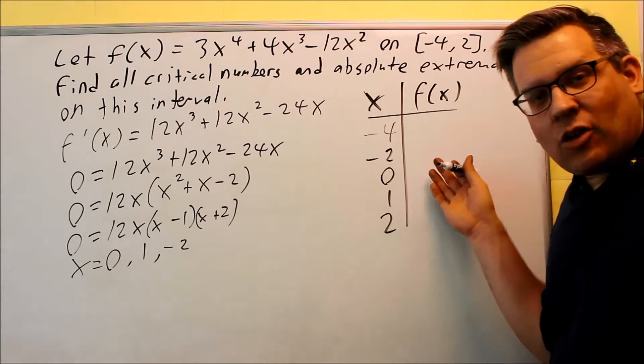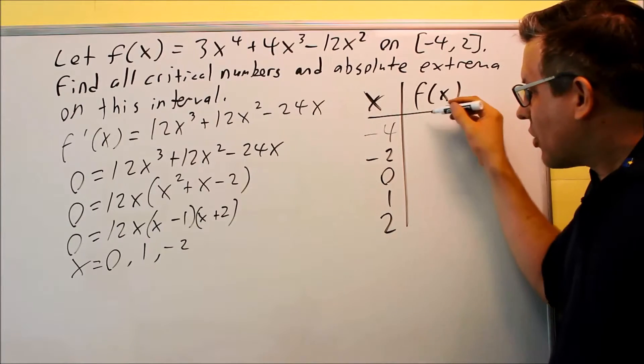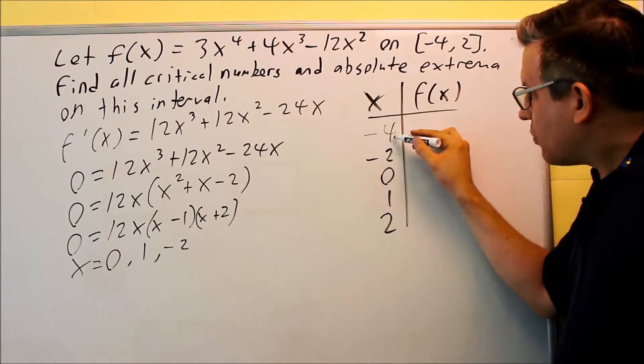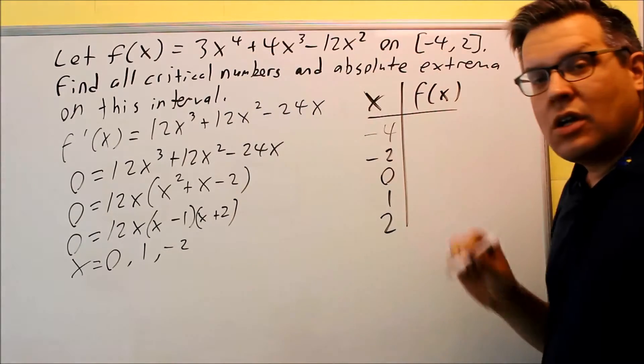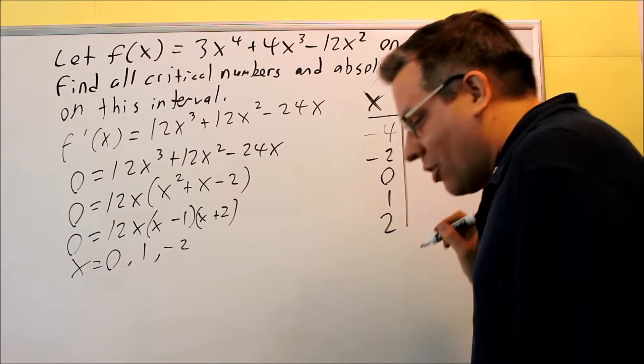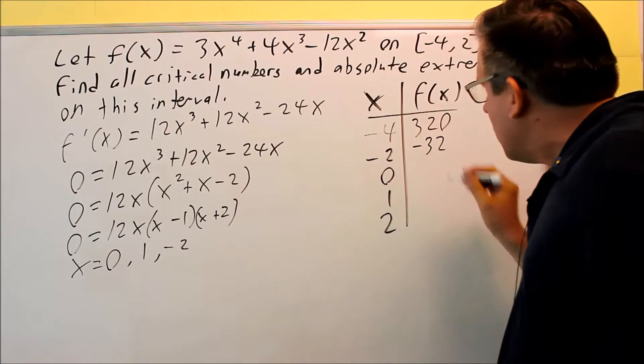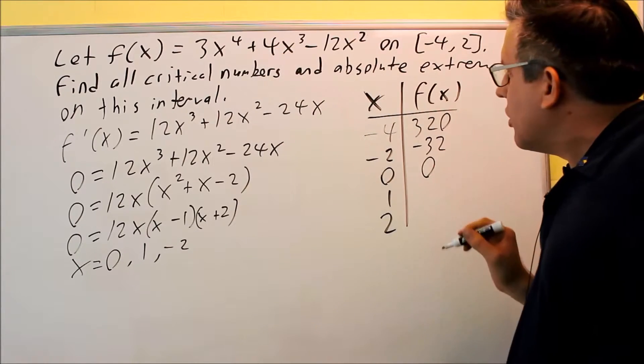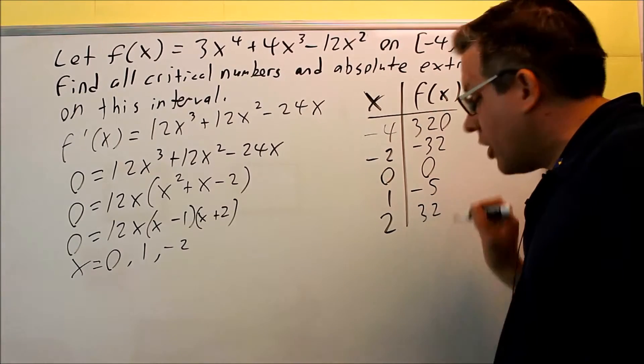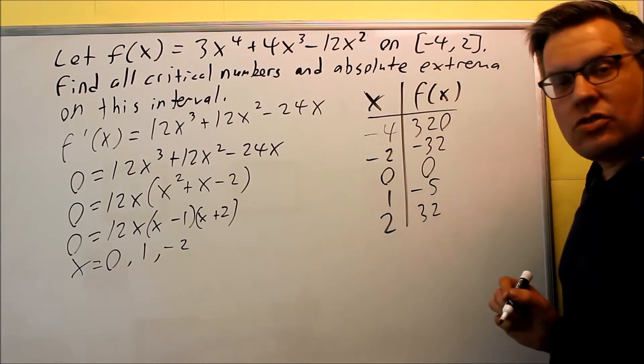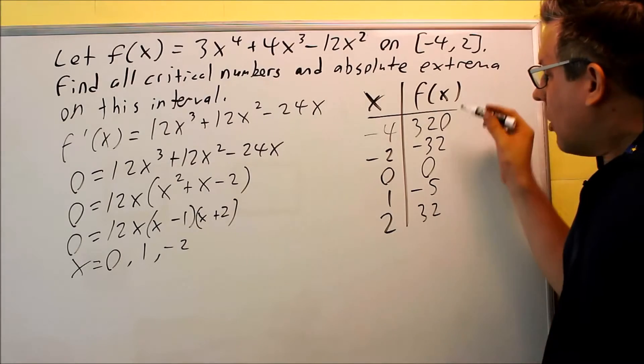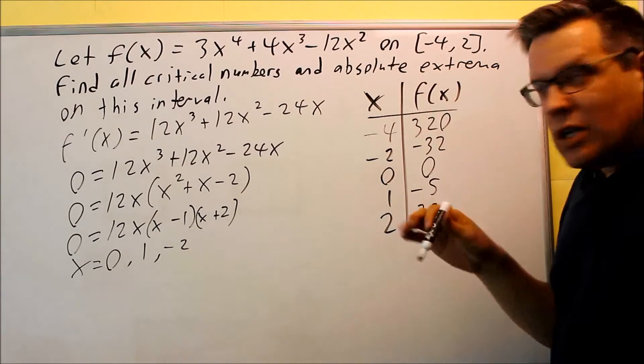Either way, if you do it by hand or by calculator, you've got to find these y values. I'm just going to give you the answers for these. You're just plugging that in for all the x's, and you're just working through calculating all of it. Here's the result if you put these numbers in. Negative 4, you're going to get 320. Negative 2 gives negative 32. 0 in for all those, you'll get a 0. If you put 1 in for all the x's, you get negative 5, and then if you put 2 in there, you're going to get positive 32. These are all the values that you'll get from your calculator when you put that in. That was step 2 and 3 by making the table.